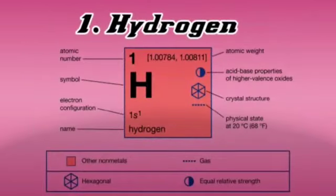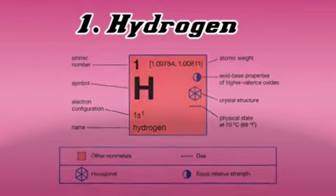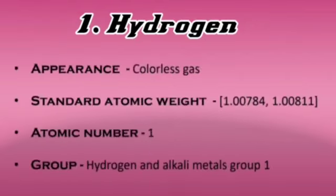The first element is Hydrogen. Hydrogen is the chemical element with symbol H. It is the lightest element in the periodic table. Hydrogen is a colorless gas and its standard atomic weight is 1.00784–1.00811. Its atomic number is 1. Hydrogen is in the alkali metals group 1.